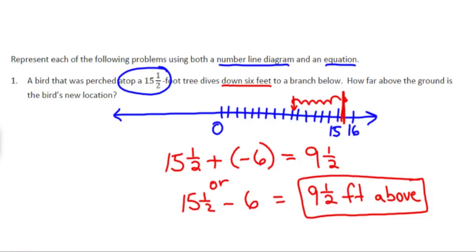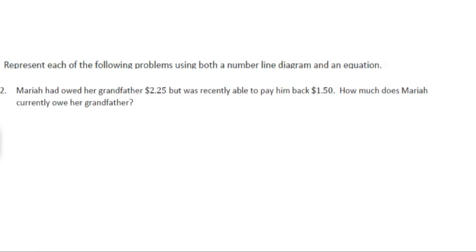Now let's look at problem number two. This reads, Mariah had owed her grandfather $2.25 but was recently able to pay him back $1.50. How much does Mariah currently owe her grandfather? Well the fact that she owed her grandfather $2.25 means that she was at a negative $2.25. So on our number line, here we have zero.